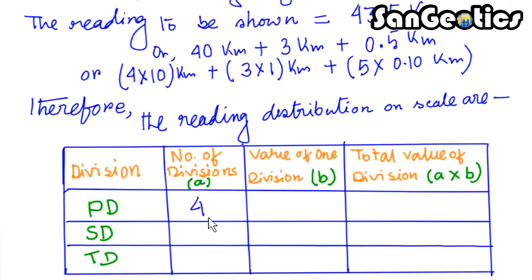Number of primary division is 4, and value of one primary division is 10 kilometers. So, the total value of primary division is equal to 40 kilometers. Similarly, we put the values of secondary division and tertiary division.